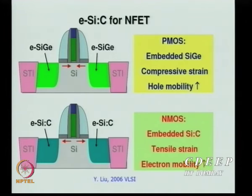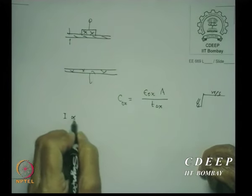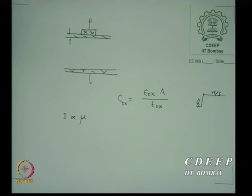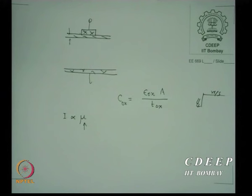Intel's major interest for high speed is improving mobility. In MOS transistors, current I is proportional to carrier mobility μ. In silicon at high fields, typical MOS mobility is 400–600 cm²/V·s, versus bulk silicon's 1200 cm²/V·s — reduced by surface scattering. Gallium arsenide has 8500 cm²/V·s, about 6 times higher.